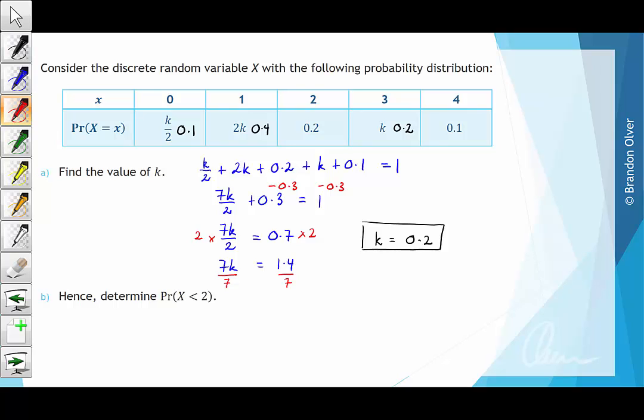So the probability that x is less than 2 is the same as saying the probability of x equals 0 plus the probability x equals 1. If we sum those two things together we have 0.1 plus 0.4 which means that the probability that x is less than 2 is 0.5.